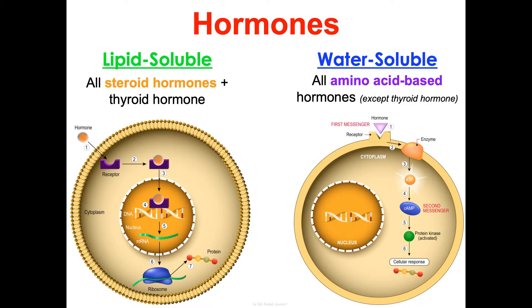A summary diagram illustrates these differences: lipid-soluble (steroid hormones plus thyroid) travel through the plasma membrane to an intracellular receptor, then immediately activate genes to transcribe mRNA and translate it into a new protein. Water-soluble (amino acid-based hormones minus thyroid) bind receptors on the plasma membrane, initiating a cascade requiring energy — using a second messenger to start a signal transduction pathway — until the desired response is achieved. That covers the endocrine system.